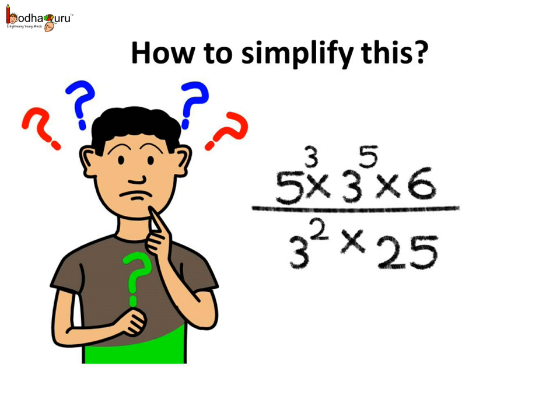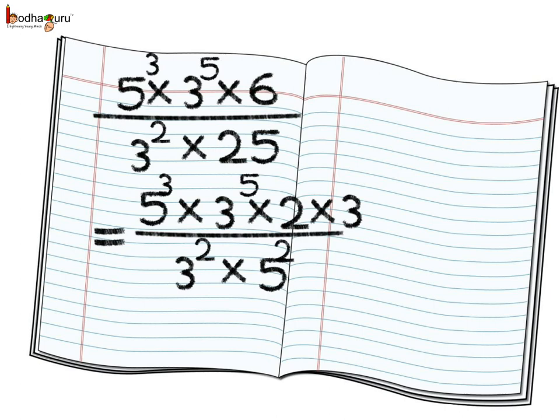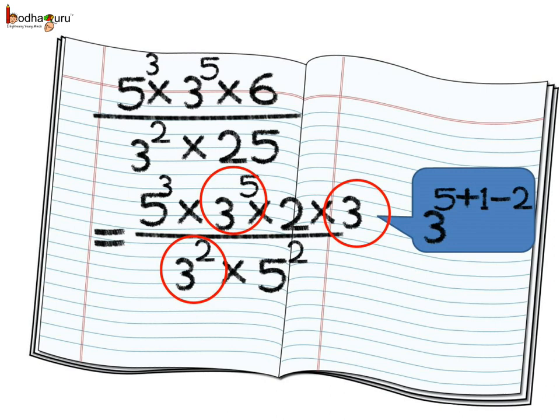Now let us simplify another expression: 5 cubed multiplied by 3 to the power 5 multiplied by 6, all divided by 3 squared multiplied by 25. In the numerator we can break 6 as 2 into 3, so we get one more 3, giving 3 multiplied by 3 to the power 5. In the denominator, 25 equals 5 squared. In the numerator, 3 to the power 5 multiplied by 3 is actually 3 to the power 1, so combined with 3 squared in the denominator, we get 3 to the power 5 plus 1 minus 2.